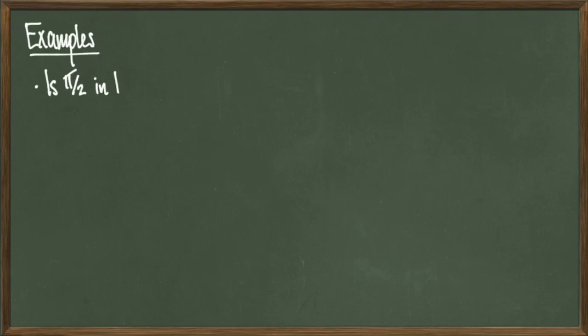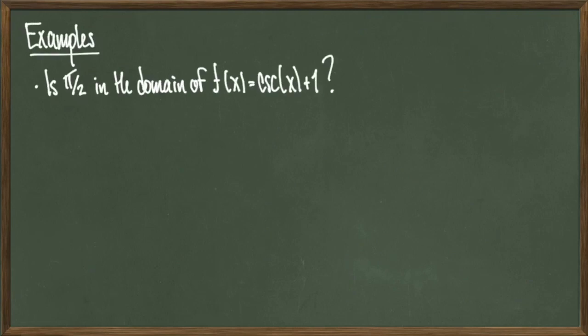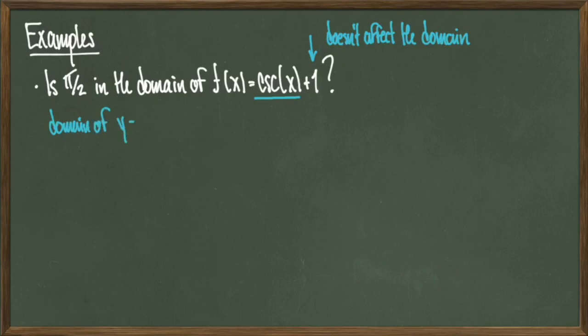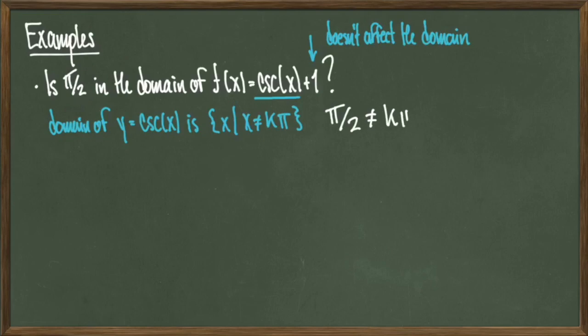We'll wrap up with some quick examples. First: is pi over 2 in the domain of cosecant(x) + 1? The plus 1 outside the function does not affect the domain — it only affects the range. The domain of cosecant of x is all real numbers x such that x is not equal to some integer multiple of pi. Since pi over 2 is not equal to any integer multiple of pi, pi over 2 is in the domain of cosecant of x. In fact, cosecant of pi over 2 equals 1, as the unit circle confirms.